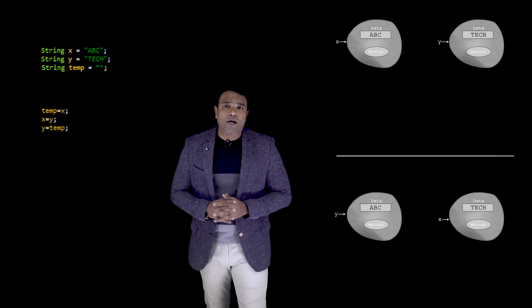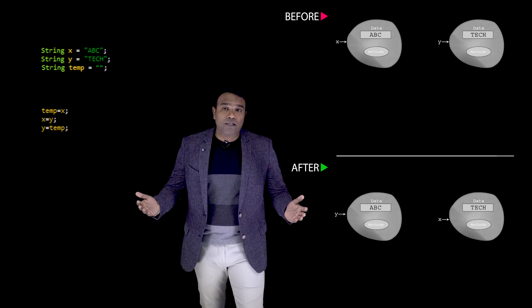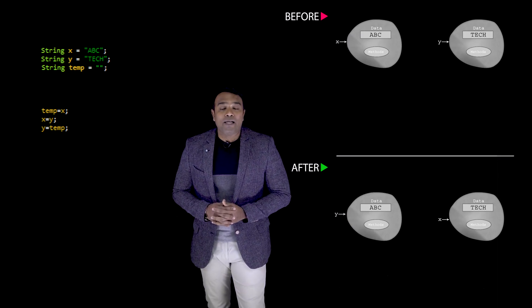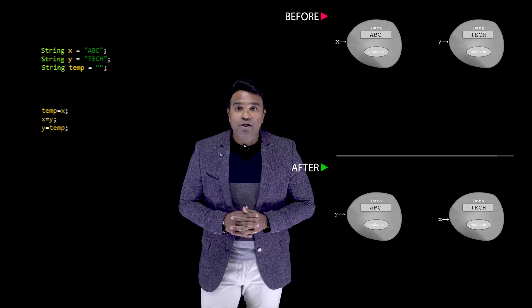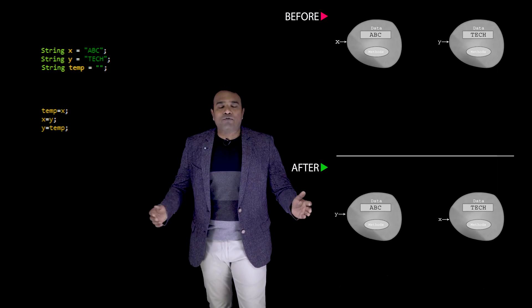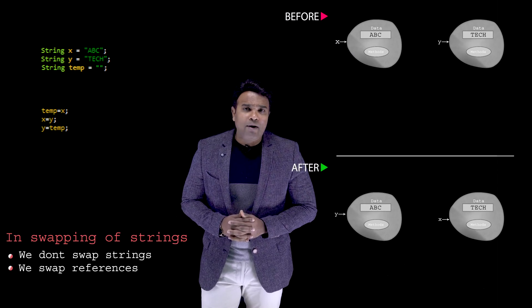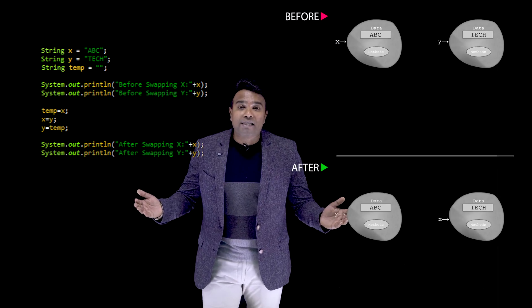Forget about the empty string and temp for now — just look at x and y. This is how things were before executing these three lines, and this is how they look after. You can see that the strings 'abc' and 'tech' have not been swapped — it is the references that have been swapped. Initially x was pointing to 'abc', now x is pointing to 'tech', and y which was pointing to 'tech' is now pointing to 'abc'. These lines print what x and y pointed to before and after swapping. This is the complete program, and this is the output.